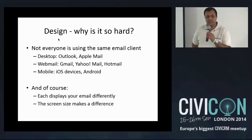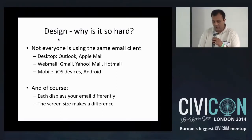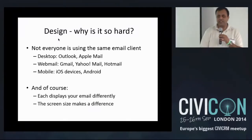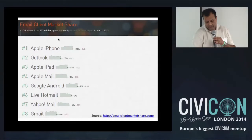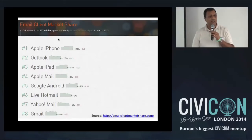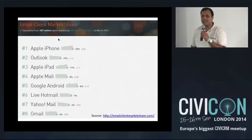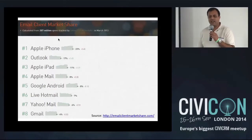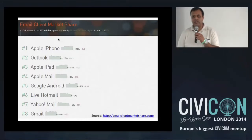The first thing is design. In your email design, what do you need to take into account? Design is important because everybody's using slightly different mail clients — Outlook, Apple, Gmail, Yahoo — and there are differences in screen sizes and resolutions. These are some stats Nicholas put together to show what browsers and interfaces people use to read emails. The number one is Apple iPhone. How many of you take into account that the most likely interface someone will open your email on is an iPhone and not Outlook?